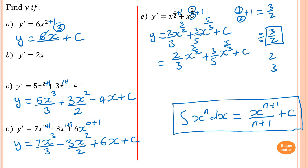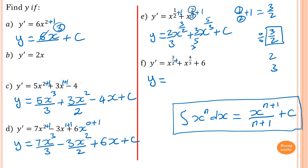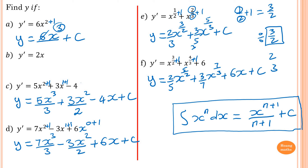Try this one yourself and pause the video. y equals — add 1 to the power 3 over 2: 3 over 2 plus 1 equals 5 over 2, divided by 5 over 2, which flips to multiply by 2 over 5. Then add 1 to the power 4 over 3: 4 over 3 plus 1 equals 7 over 3, divided by 7 over 3, which flips to multiply by 3 over 7. Then add 6x, plus constant C.